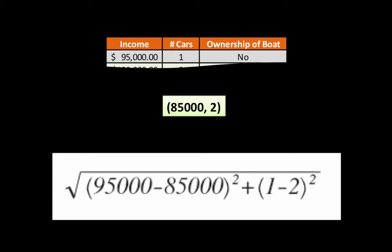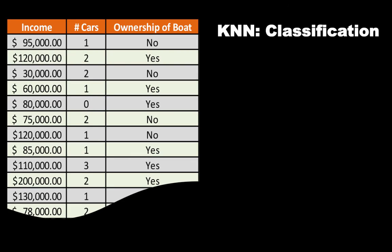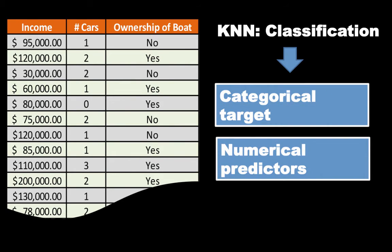Because 95,000 minus 85,000 is 10,000. 10,000 whole square is 10 raised to the power 8 or 100 million, plus 1 minus 2, the whole square is just 1. It is really small compared to the magnitude of 10,000. So the distance will turn out to be 10,000.00001 or something like that. So clearly, since we are calculating the distance, we need the predictor attributes to be numeric. You can't have colors like red and blue here, then how will you calculate the distance? They all have to be numbers. And since we are talking about a classification problem, obviously the target attribute has to be categorical, because you are trying to classify it into one of a few categories. So the target attribute has to be categorical for KNN for classification. And the predictor attributes have to be numeric. Now regression is also possible with KNN, but we will talk about that later in the course.